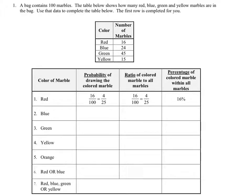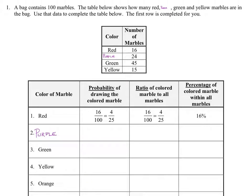A bag contains 100 marbles. The table shows how many red, green, and yellow marbles are in the bag. Use that data to complete the table below. The first row is completed for you. We gave you guys the probability of drawing the red marbles and the ratio of colored marbles of the red to all the marbles and also the percentage, which was extremely generous.